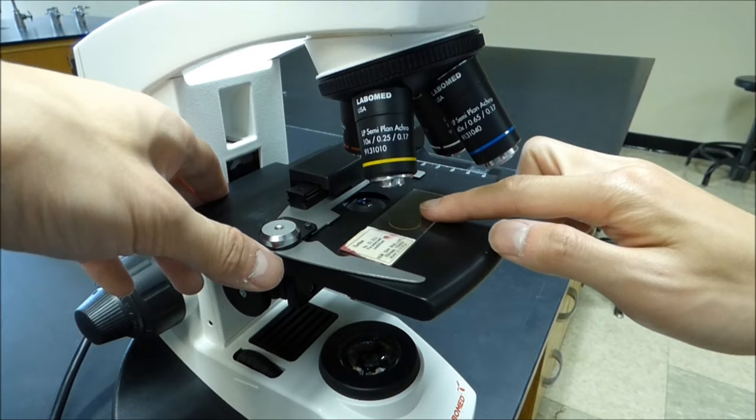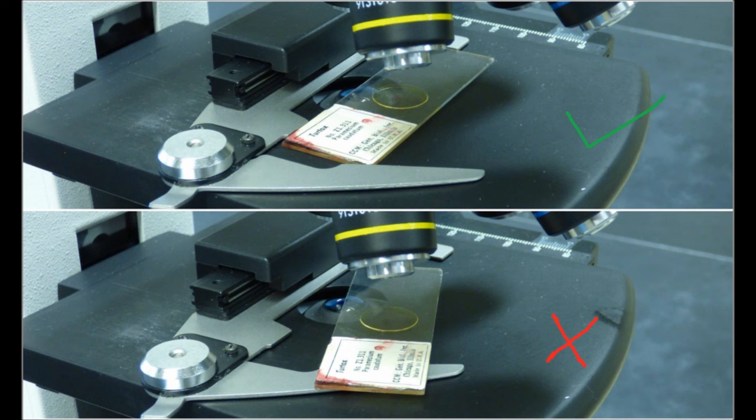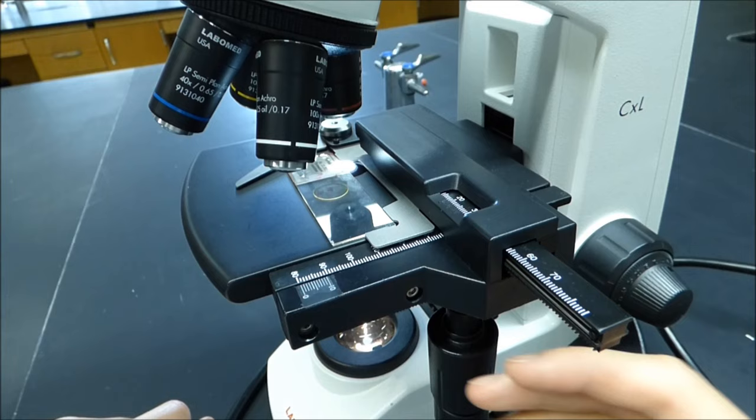Clip the slide onto the microscope's platform stage using the stage clips. Ensure that the slide is properly clipped with the cover slip facing up. The clip should be at the same level as the slide, not on top of it.